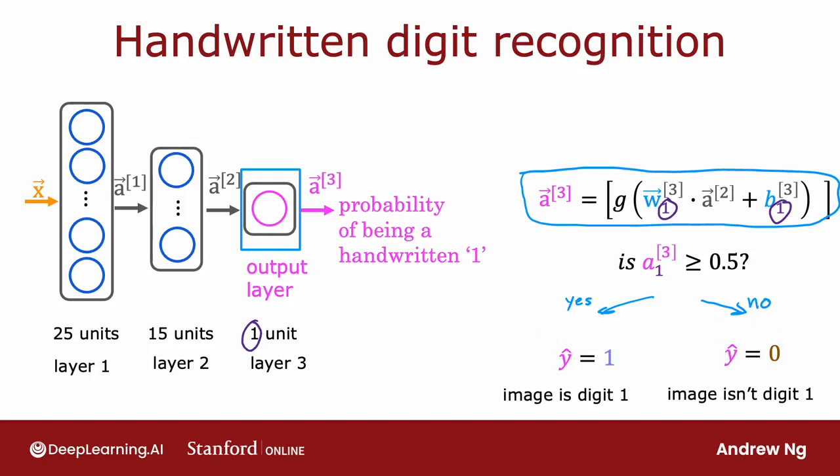So the sequence of computations first takes x, and then computes a1, and then computes a2, and then computes a3, which is also the output of the neural network. So you can also write that as f of x. Remember, when we learned about linear regression and logistic regression, we use f of x to denote the outputs of linear regression or logistic regression. So we can also use f of x to denote the function computed by the neural network as a function of x.